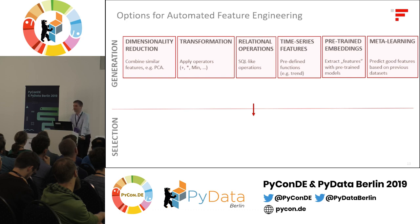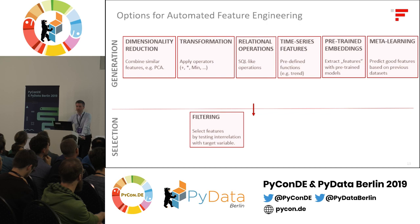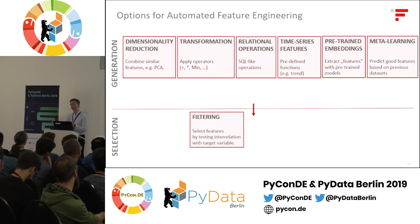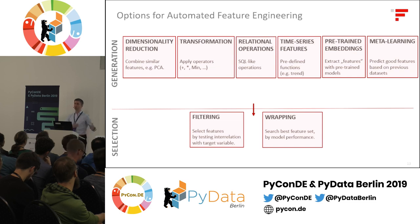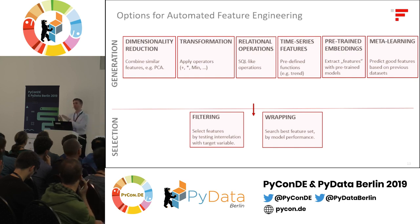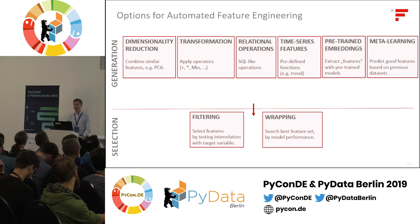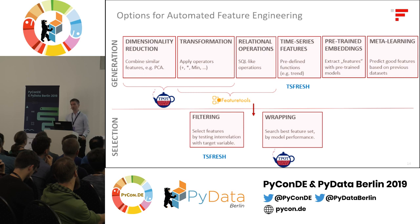For feature selection, it's a bit simpler. There's filtering: looking at individual features univariately — for example, correlating each feature candidate to the target variable to see if it contains good information. There's also wrapping: taking subsets of all possible features, using them with a real model trainer to get a prediction, and using the quality of that prediction to search for the best subset. These are the three tools placed across this landscape that I'd like to tell you more about.